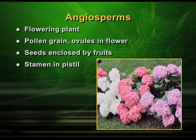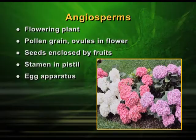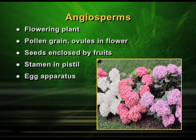So the pistil is there, the egg apparatus is there, and the pollination can be self-pollination or cross-pollination depending on which tree or which flower we are talking about. All the flowering plants you can see fall into this category. Pollen grains and ovules are within the flower. The main thing to note is that the ovule is within the ovary or within the fruit — meaning it is not naked, it is covered — whereas in the previous category, gymnosperms, the seeds are naked. In angiosperms, the seeds are not naked.